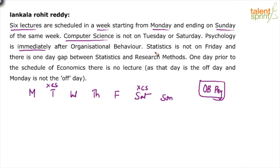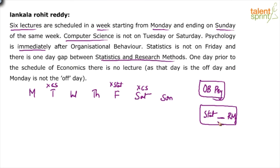Statistics is not on Friday. There is one day gap between Statistics and Research Methods — so if we represent this: Stat [gap] RM. One important point: it could be in two ways. It can be Stat–gap–RM, or we can swap them to get RM–gap–Stat. Unlike the OB-Psychology clue where order was clear, here either order is possible. So it can be Stat–RM or RM–Stat.